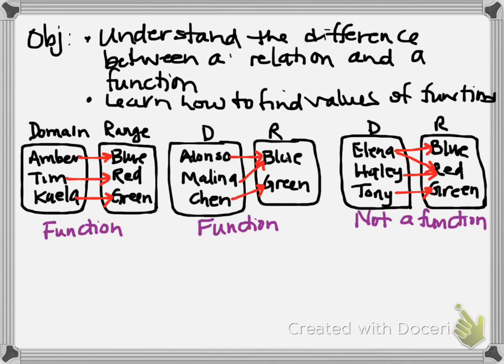Because Elena chose two. So when you have one domain that chooses two ranges or pairs up with two ranges, that's what eliminates it from being a function. So let's write down the definition of function.